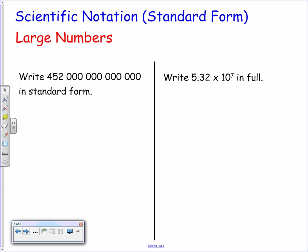Here are a couple of examples. First, we have to write a large number in standard form — remember, standard form and scientific notation mean exactly the same thing. We want a number between 1 and 10 at the start, so we place a decimal point between the first two non-zero digits, giving us 4.52. We then count how many times the decimal point has moved from the end of the number — counting in threes: 3, 6, 9, 12, 13, 14 times — so in standard form this is 4.52 × 10^14.